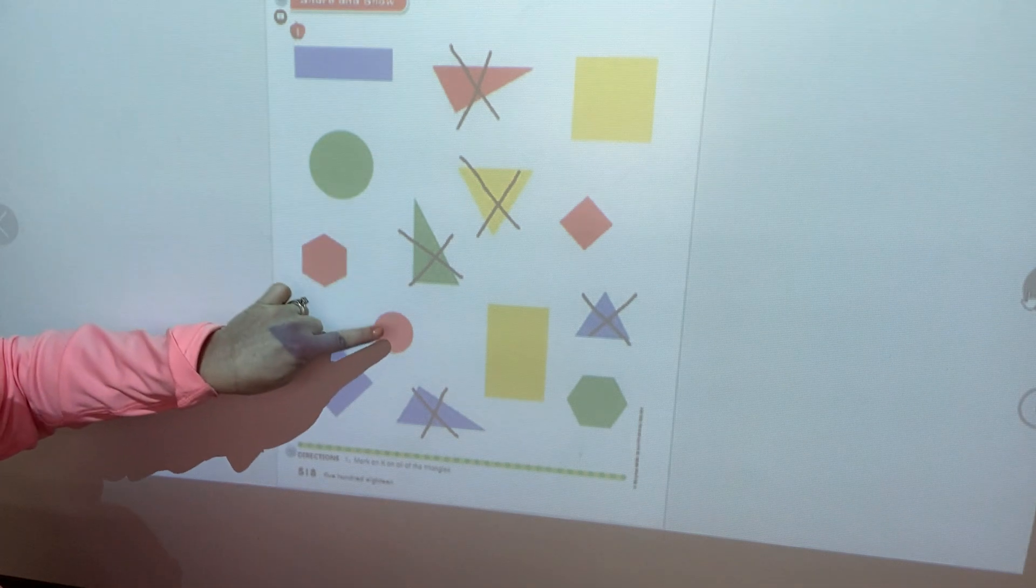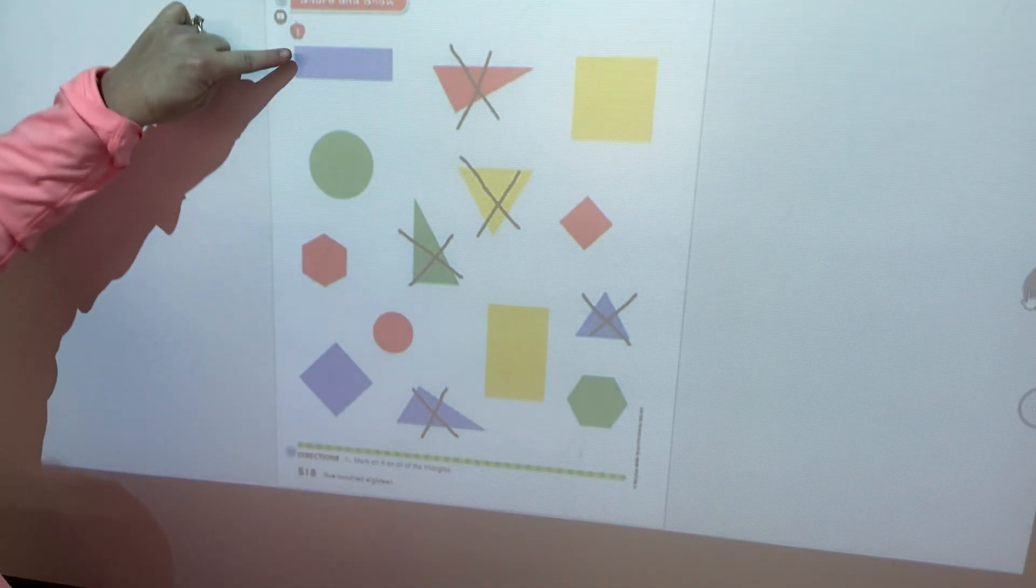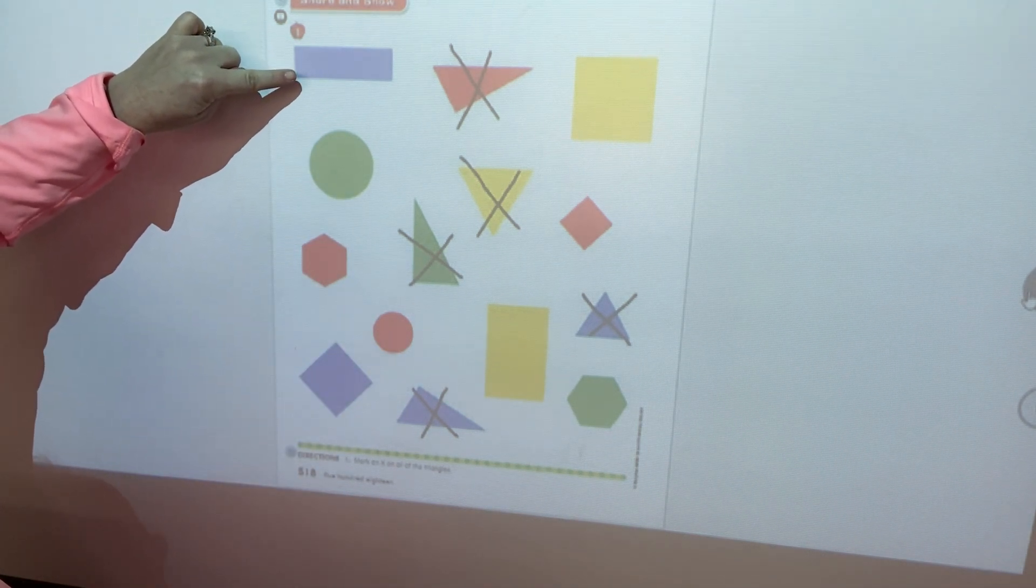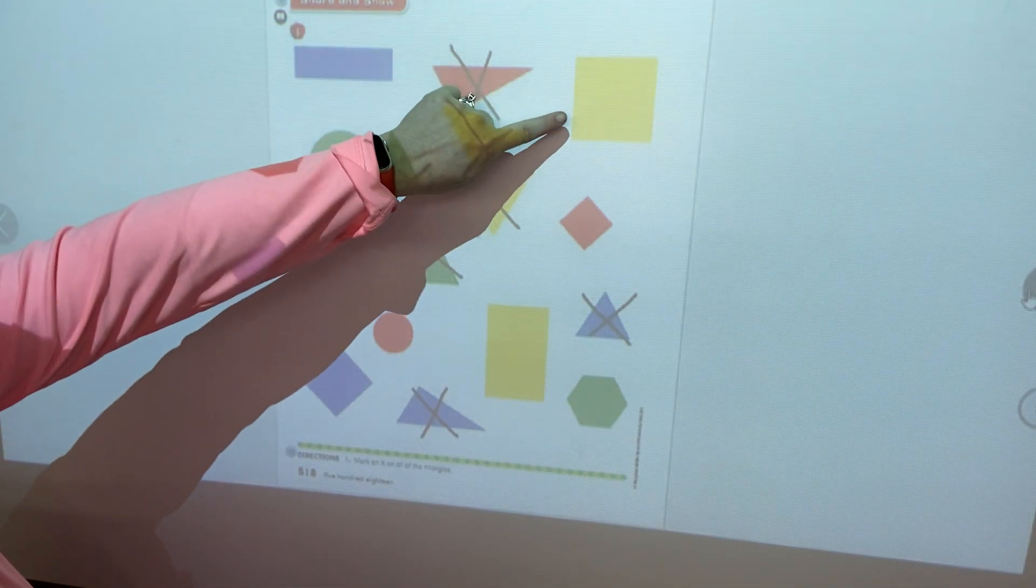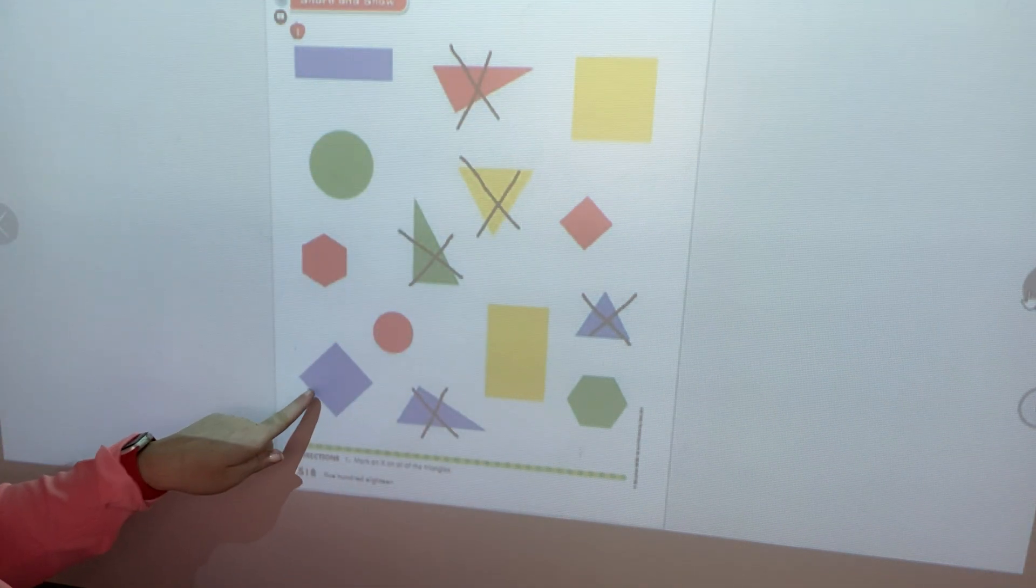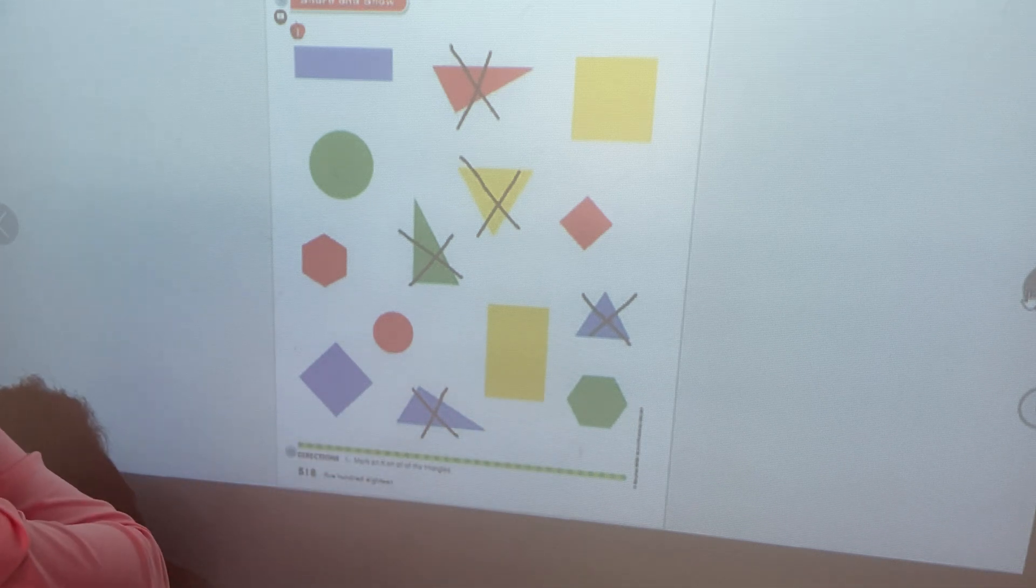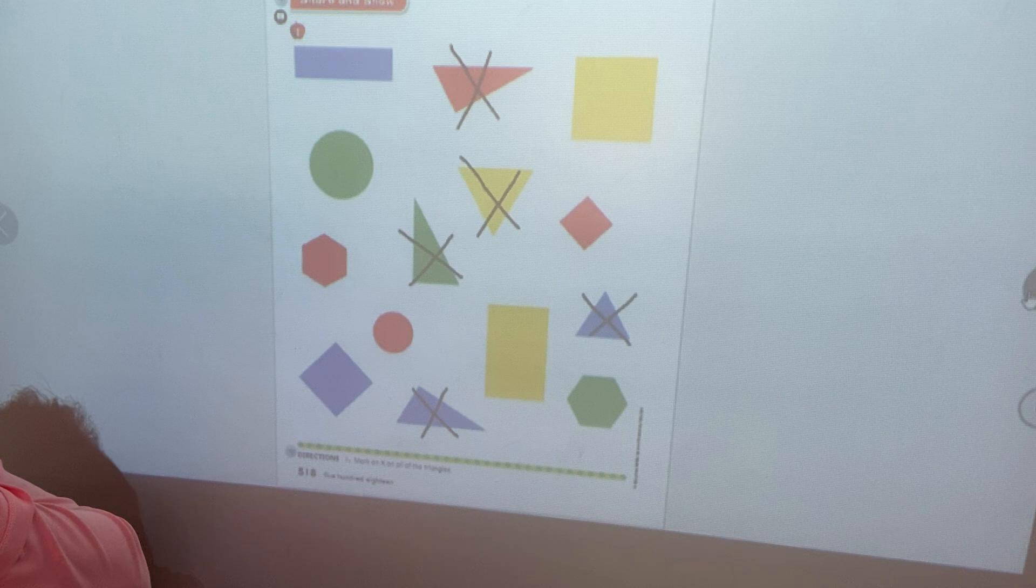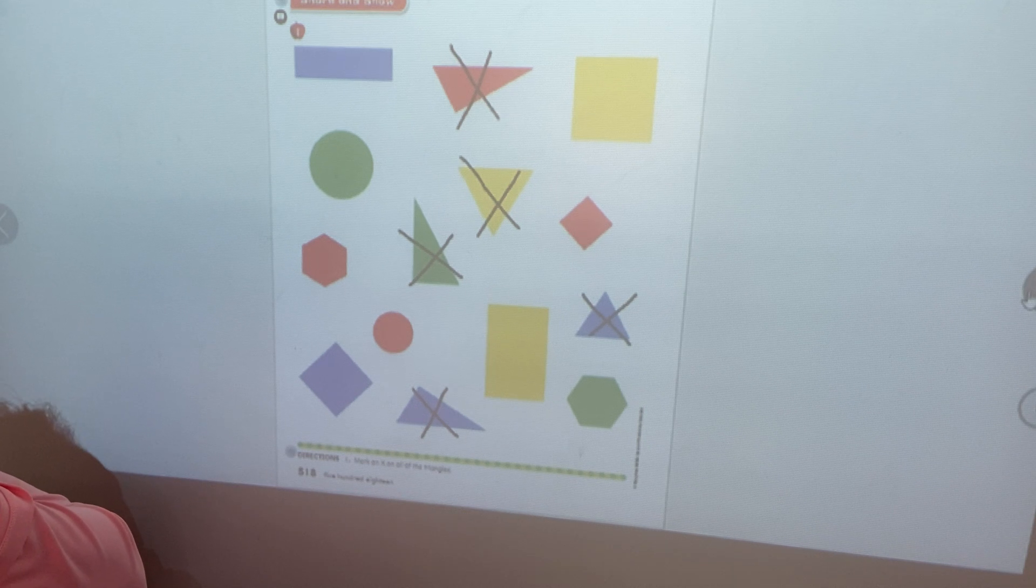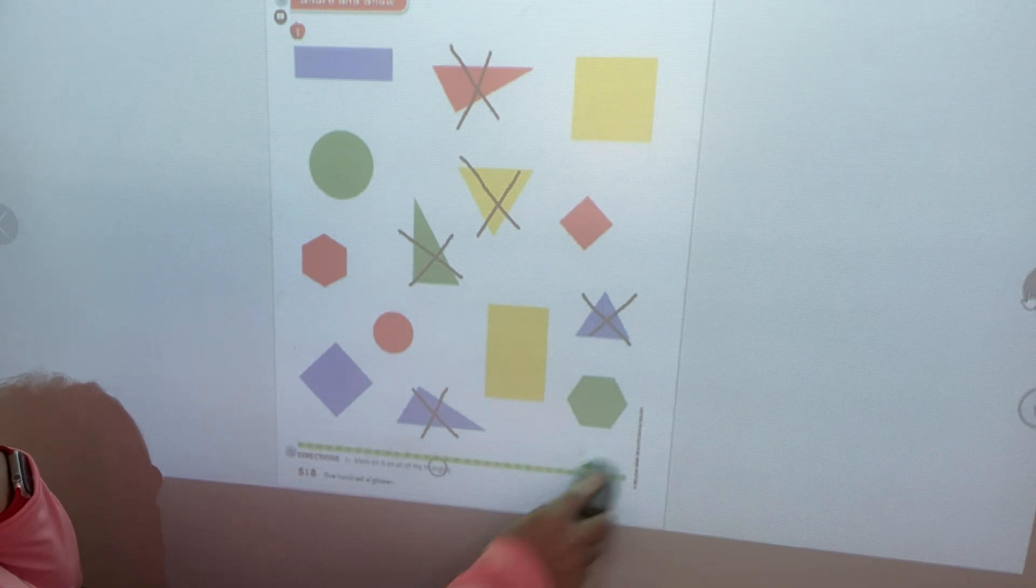This would be a circle and a circle. This would be a rectangle, a square, a square, a rectangle, a square, and there's that six-sided figure we talked about a couple days ago. Six sides means it's a hexagon. A hexagon. Okay, friends.